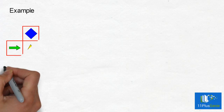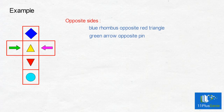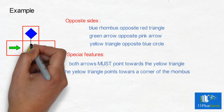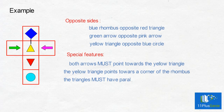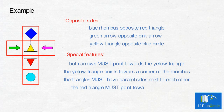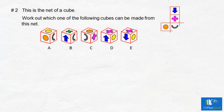Let's look at an example. For the given net, opposite sides are: the blue rhombus is opposite the red triangle, the green arrow is opposite the pink arrow, and the yellow triangle is opposite the circle. Special features: both arrows must point to the yellow triangle, the yellow triangle points towards a corner of the rhombus, and the triangles must have parallel sides next to each other.